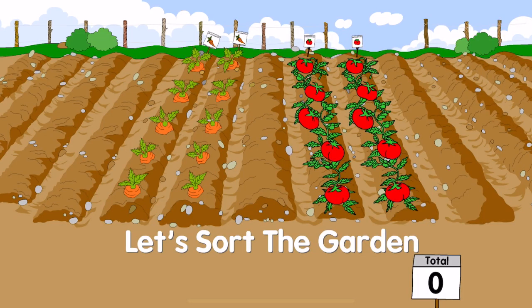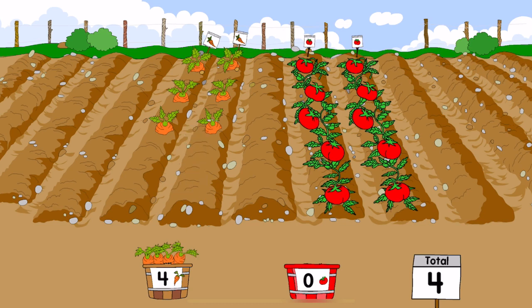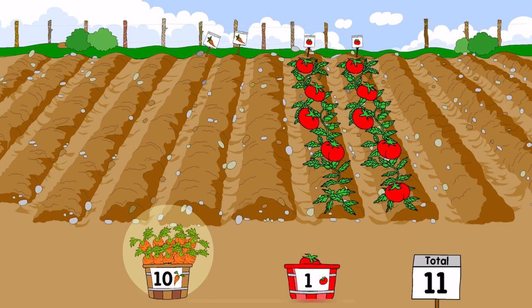Let's sort the garden. One carrot. Two carrots, three carrots, four carrots, five carrots. Six carrots, seven carrots, eight carrots, eight carrots, nine carrots, ten carrots. One tomato, two tomatoes, three tomatoes.